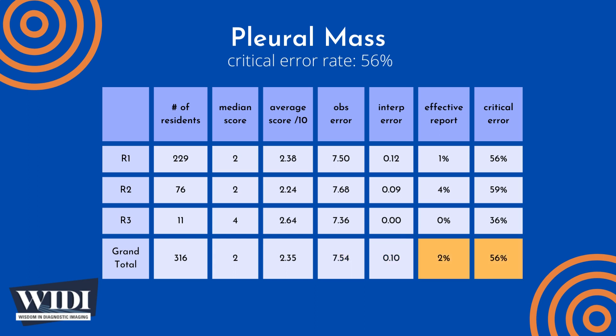We define an effective report to be one which achieves scores between 7 and 10. In terms of letter grades, this would be an A or a B. In this most missed case, 2% of residents produced effective reports.